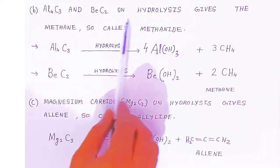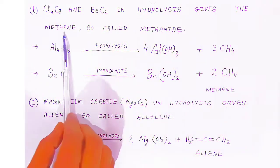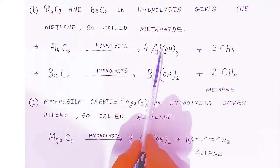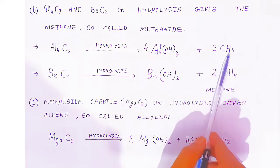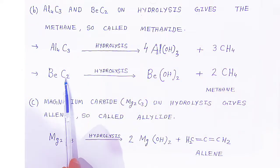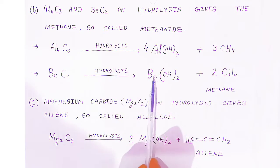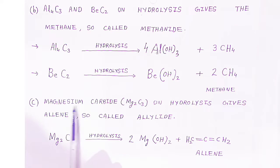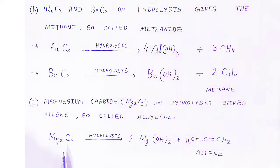Aluminium carbide and beryllium carbide on hydrolysis give methane (CH₄), so they are called methanides. Aluminium carbide on hydrolysis gives aluminium trihydroxide and methane. Beryllium carbide on hydrolysis gives beryllium dihydroxide and methane. Magnesium carbide on hydrolysis gives allene (C₃H₄), so it is called an allyide. To prepare allene, you use magnesium carbide.